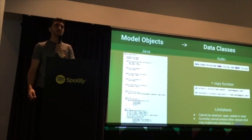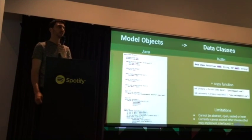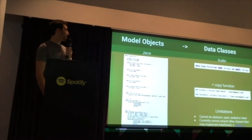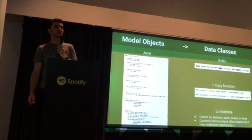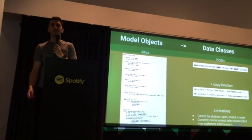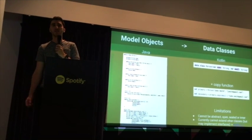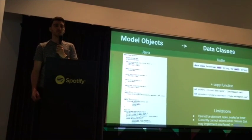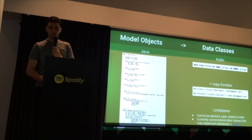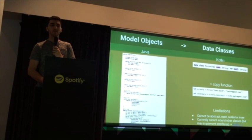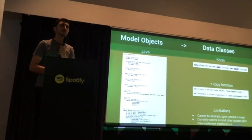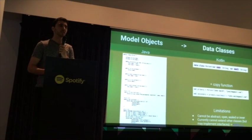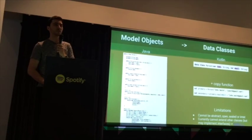There are some limitations: you can't have an abstract or open data class, which means you can't extend from them. However, in Kotlin 1.1 they will lift that restriction, so you could have data class hierarchies if you wanted to.